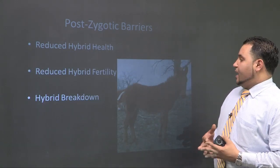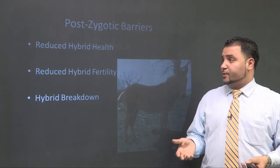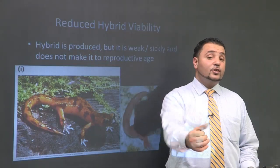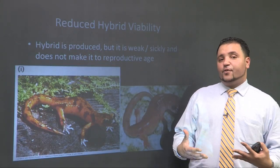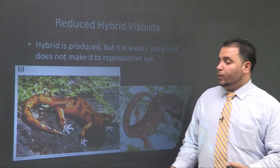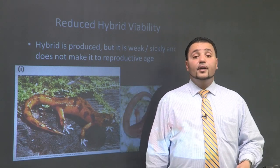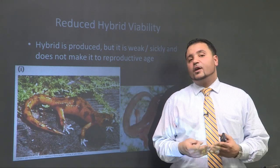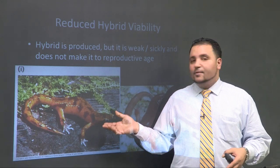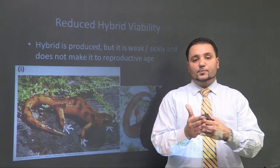Now we get to post-zygotic barriers — what happens after you make a zygote. Reduced hybrid viability: these are two species of salamander that actually mated through external fertilization, but all their offspring came out sick and weak. The offspring don't live long enough to actually mate themselves, so you don't create a new species. Whatever this hybrid is, it's just really weak and sick, never gets to mate with another hybrid of its own kind — so they die. We don't call it a new species. The speciation has stopped.